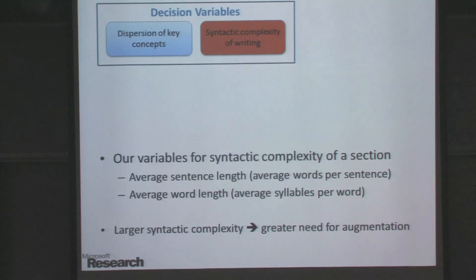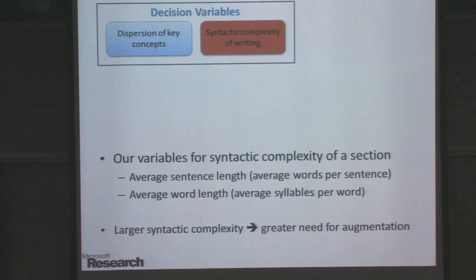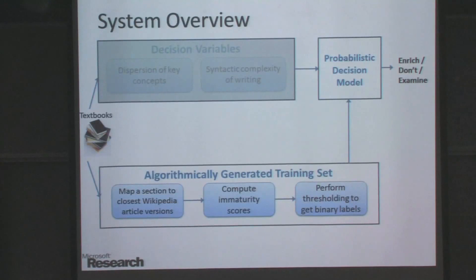One variable is a measure of the complexity of the sentences, such as average words per sentence. The other is the measure of how complex the words are, such as the average number of syllables per word. The intuition is that if a section has large syntactic complexity, it gets harder to understand, especially at the high school level.